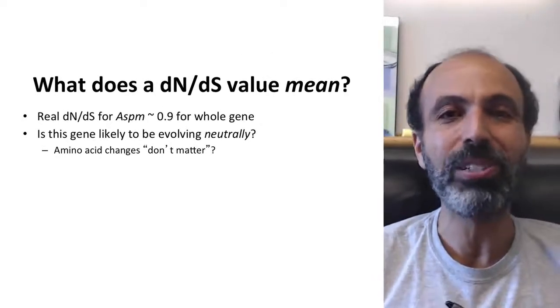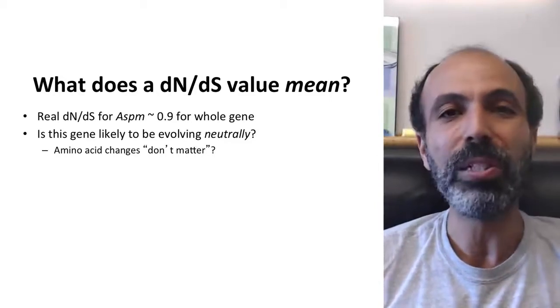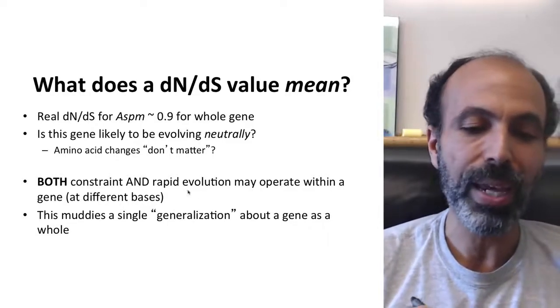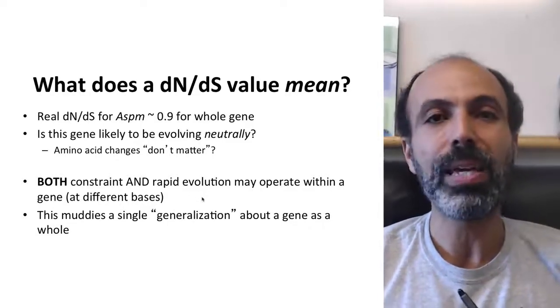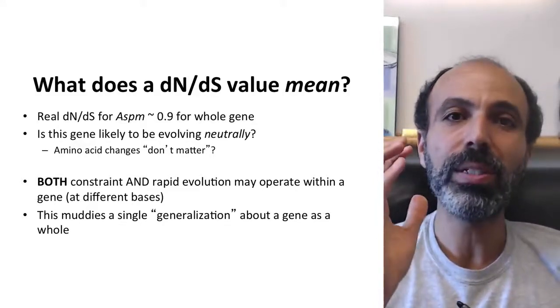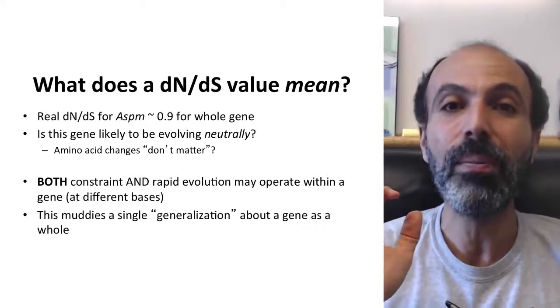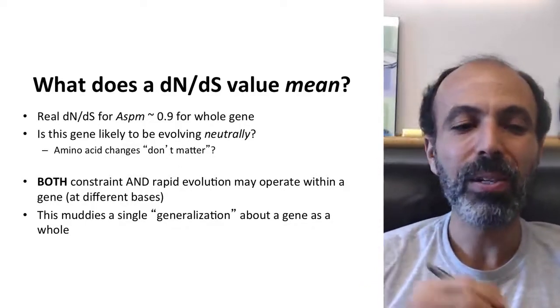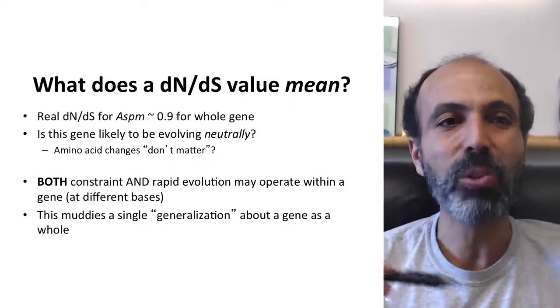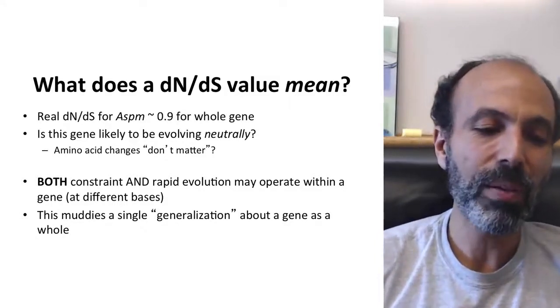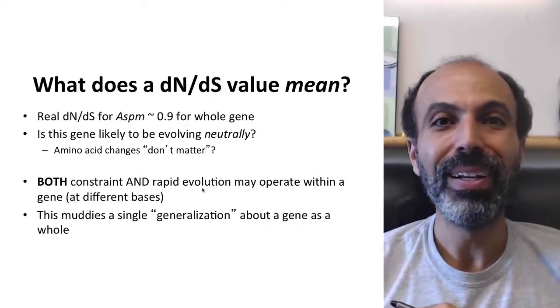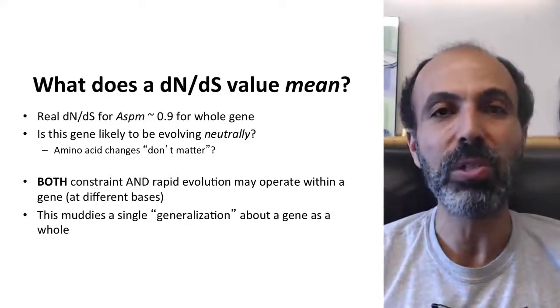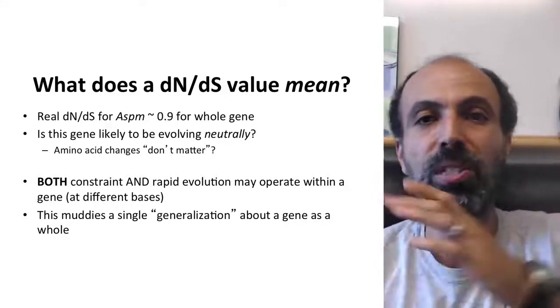That's really very unlikely that any amino acid change there really doesn't matter. What's probably happening instead is we're having a combination of both constraint and rapid evolution within the same gene. That there are some nucleotide changes there that are being rapidly selected out, but there are some that are actually beneficial and they're going through. When you have both of those together, your dN/dS value is taking this kind of average across the whole gene. So, when you have constraint and rapid evolution together, it's kind of hard to tell what's going on. And this muddies how you can do a single generalization about a gene as a whole. And some people will actually break up the gene and look at sections of it independently.